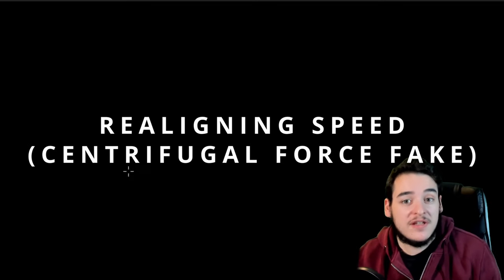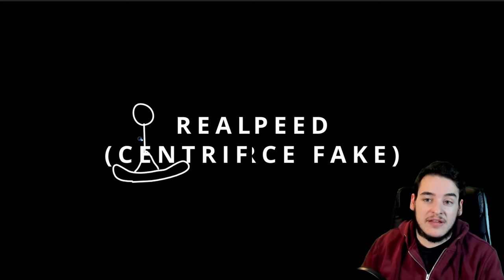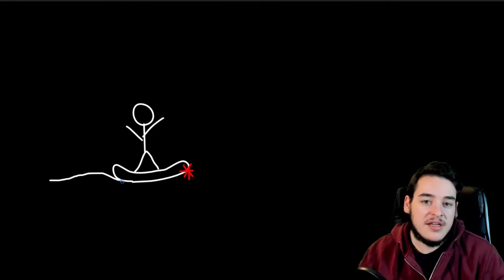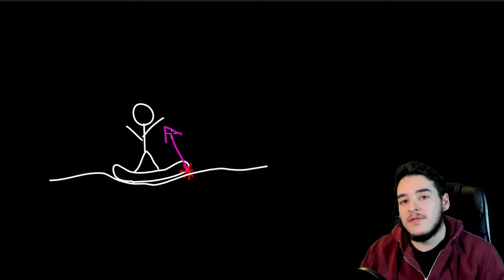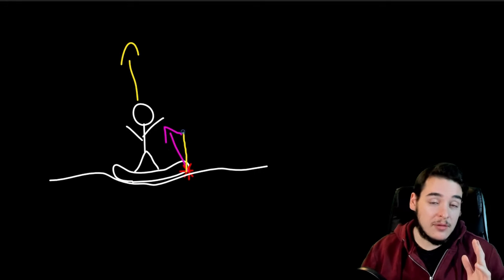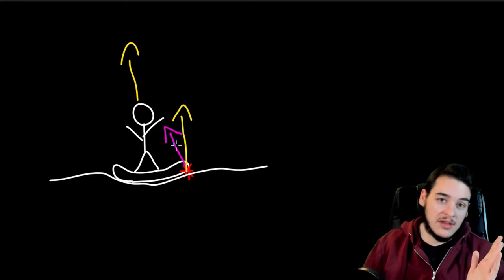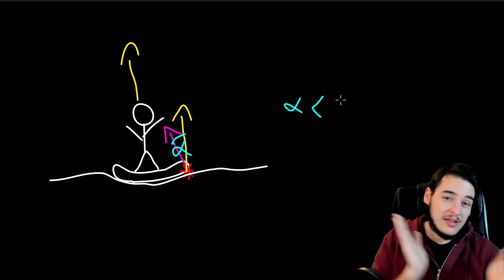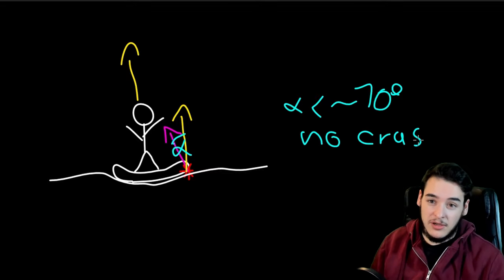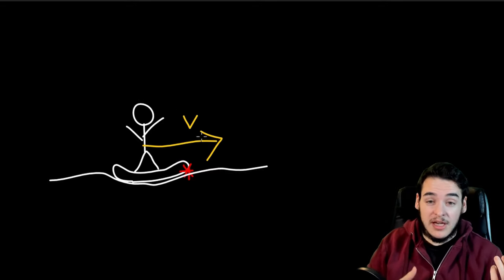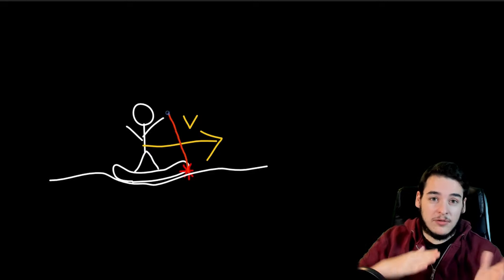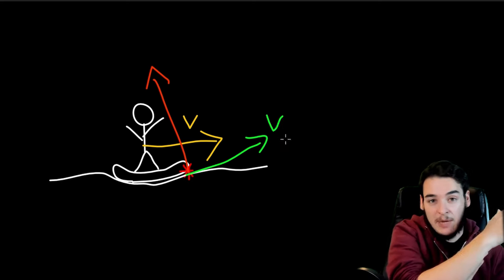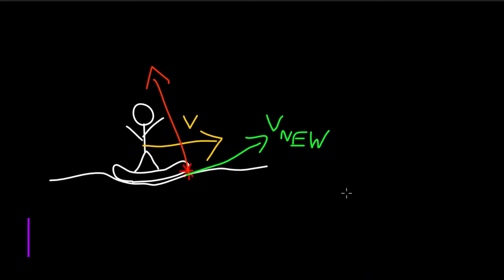My other solution was to check the hit event. When the character gets stuck, it means it hits something. In the hit event, I calculated the angle between the hit and the character's up vector. If it was a very small angle, this meant it's a floor he should drive on. When that happened, I just realigned the velocity to go along the floor again, keeping the speed the same. And that solved those problems.